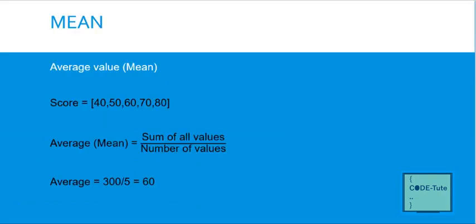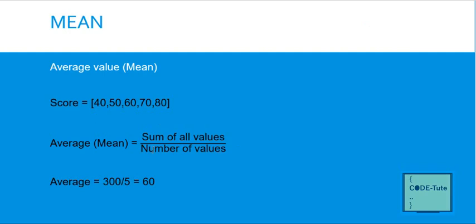Today's topic is mean, median, and mode. Mean is the average value. For example, if you have values like 40, 50, 60, 70, 80, the formula is sum of all values divided by number of values. Add all these numbers — the total is 300 — then divide by 5 (the number of values), giving you the mean.